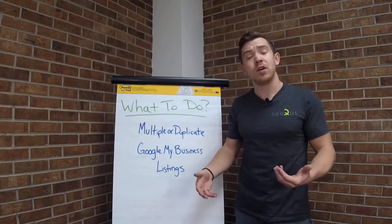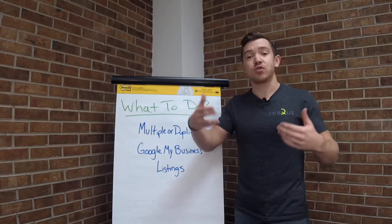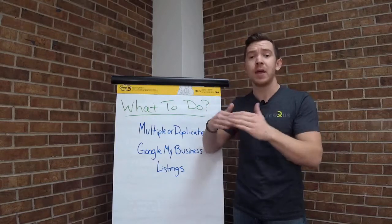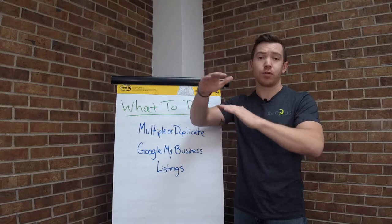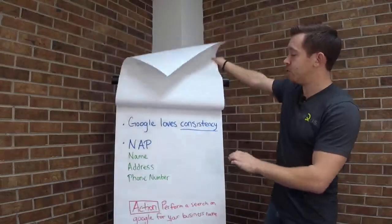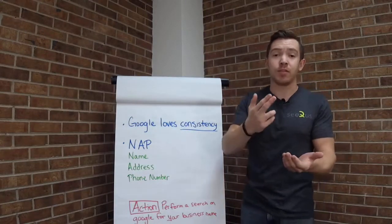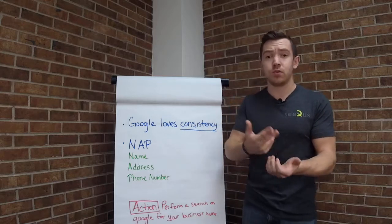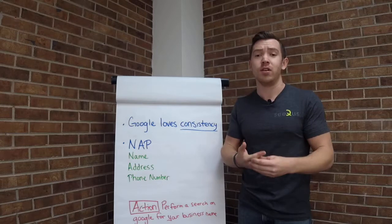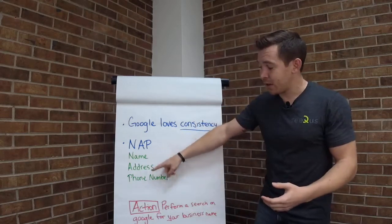When your customers are looking for your business, they should see just the actual location, that one listing that's truly you guys. They should see all the awesome reviews you've gotten and make sure they're calling the right place. Google loves consistency - they like to see that your name is the same on Google as it is on your website, as it is on Facebook, as it is on Yelp or whatever listing you have out there. That name, address, and phone number - that NAP.